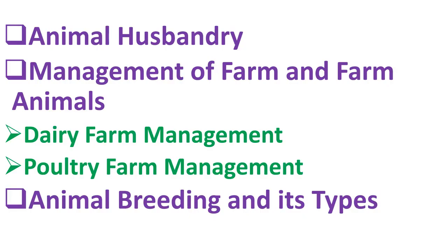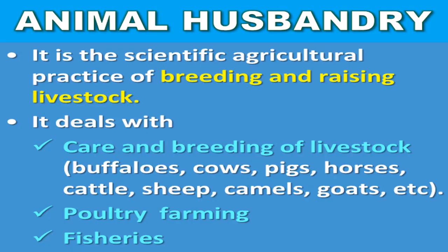Let's start with animal husbandry. Animal husbandry is the scientific agricultural practice of breeding and raising livestock. You might have heard about agriculture — that agriculture is the raising of different crops — but it also includes the raising of different animals. Here it is the scientific agricultural practice of breeding and raising of livestock which includes different farm animals like buffalos, cows, sheep, etc.